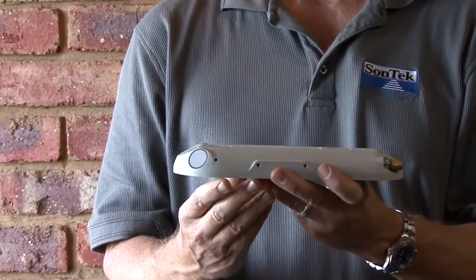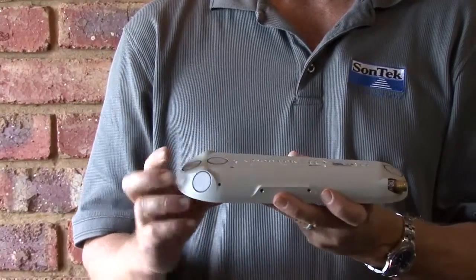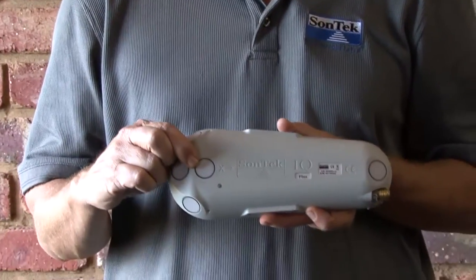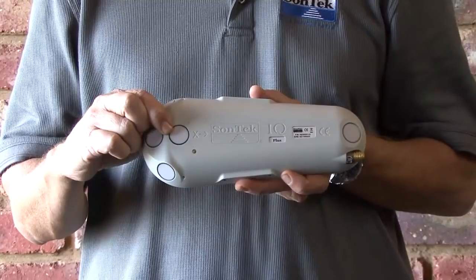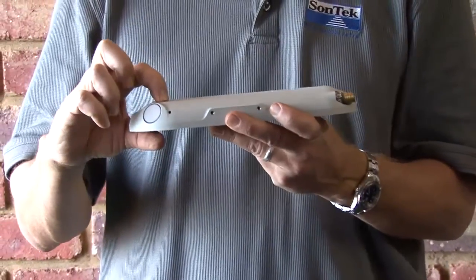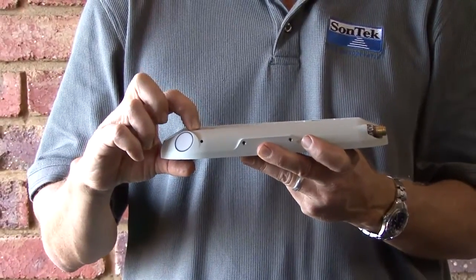The next measurement that we need is actually the water level, and so we make the water level measurement using this 3 megahertz acoustic vertical beam, and we also have a pressure sensor that's embedded inside the housing as a redundant measurement.